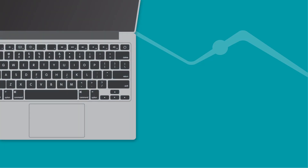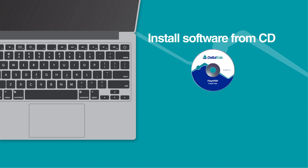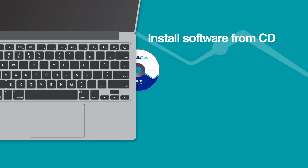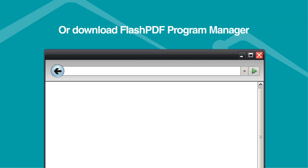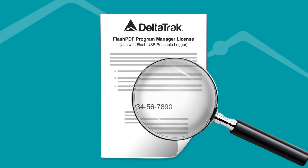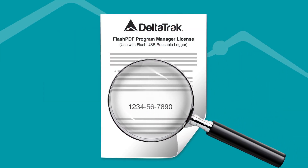Flash PDF Program Manager software can be installed from the CD or it can be downloaded from the Delta Track website. During installation, locate the serial number on the software license. If this document is missing from the box, please contact Technical Support.